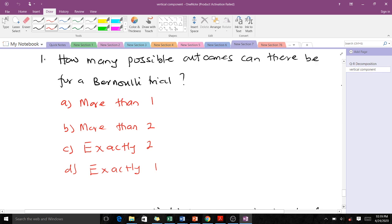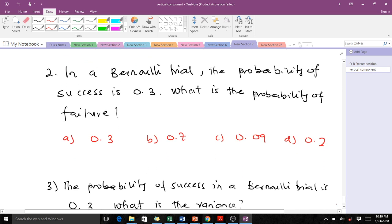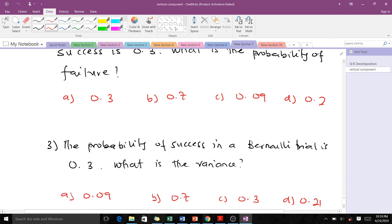The second one: In the Bernoulli trial, the probability of success is 0.3. What's the probability of failure? And the next one: The probability of success in the Bernoulli trial is 0.3. What is the variance? This should be a cool job for you.